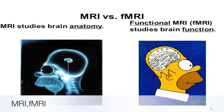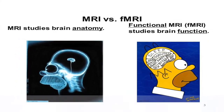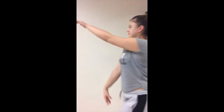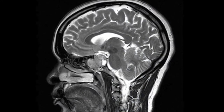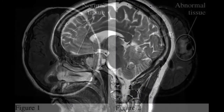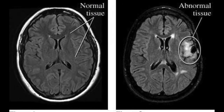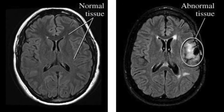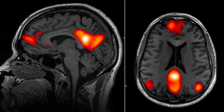Today I'm going to tell you about MRI and fMRI — the technique that uses magnetic fields and radio waves to produce computer-generated images. MRI is magnetic resonance imaging, and fMRI is functional magnetic resonance imaging.